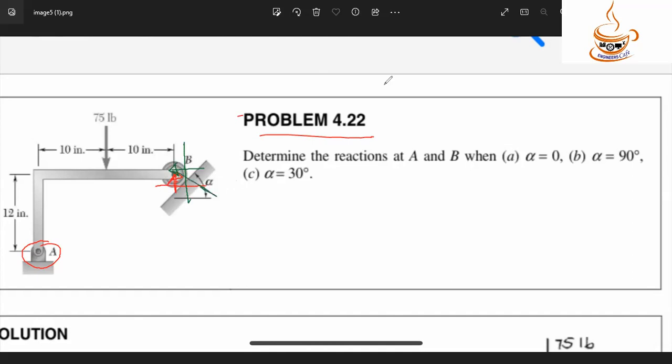The reactions at A are unknown variables. There's a moment applied, and a force at B. The 30 degree force has components that we need to consider.